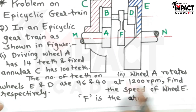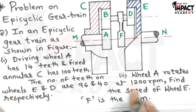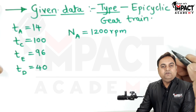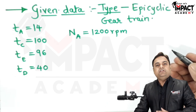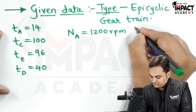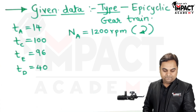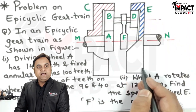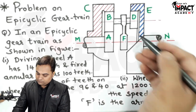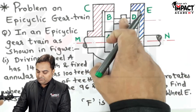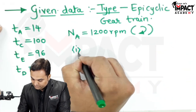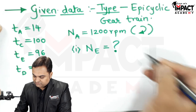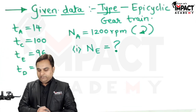Then, wheel A rotates at 1200 RPM. The direction is not specified — whenever direction is not given, we can assume it to be rotating in a clockwise manner, which is treated as positive. We have to find the speed of wheel E and its sense of rotation, either clockwise or anti-clockwise. F is the arm connecting B and D.